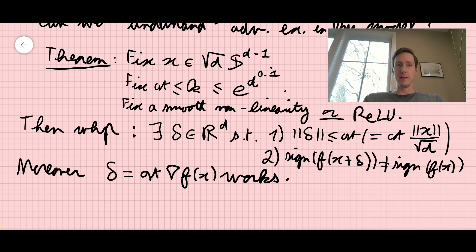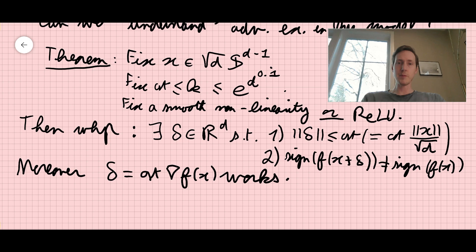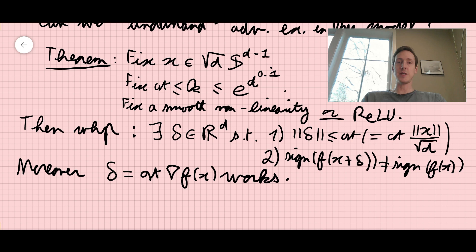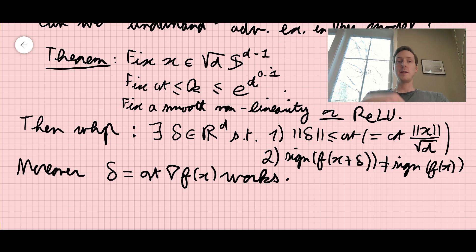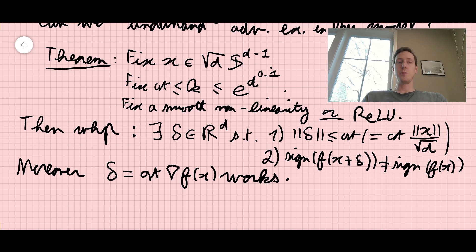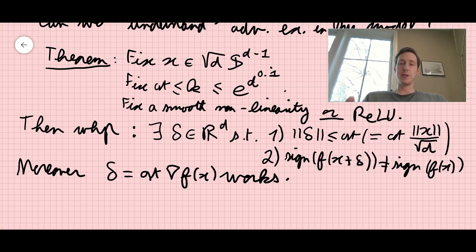In the paper by Danelli and Shaham, they only consider the rectified linear unit and prove essentially the same result, except they need a much more drastic restriction on the width — they need k smaller than the dimension. Whereas here, we can allow k to be almost exponential in the dimension. It remains an open problem to do it beyond exponential in the dimension; as we explain in the paper, there are connections to spin glasses, which are very interesting to elucidate.